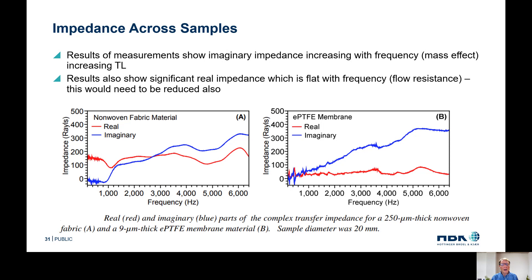To get zero transmission loss, we need both the real and imaginary parts to be zero — or as close to zero as possible. We already minimized the imaginary part by using a nine-micrometer-thick material — it's extremely lightweight. But we also see that having porosity introduces a real part. This was kind of surprising: we speculated that by eliminating or minimizing the porosity of the material, we should actually be able to improve the sound transmission loss, which is counterintuitive. You wouldn't expect that small holes would increase transmission loss, but that's what the theory says.